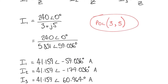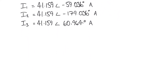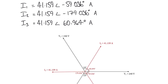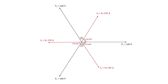A few things to notice: the magnitude of each of these currents is equal, which is consistent with our initial assumptions. Looking at the angles — minus 59, minus 179, and plus 60.964 degrees — when we plot those on a phasor diagram we can see that the currents are equally separated throughout 360 degrees, each 120 degrees apart from one another, giving us that symmetrical arrangement shown in the phasor diagram.